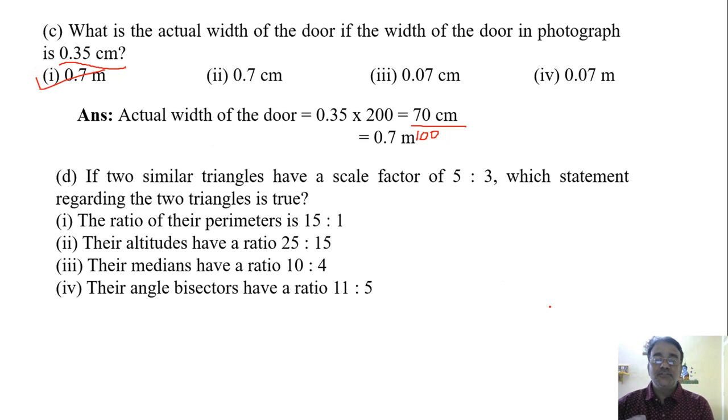Now if two similar triangles have a scale factor of 5 is to 3, which statement regarding the two triangles is true? The ratio of their perimeters is 15 is to 1. Their altitude have a ratio 25 is to 15. Medians have a ratio 10 is to 4. Angle bisectors have a ratio 11 is to 5.